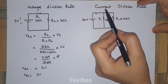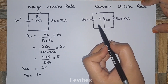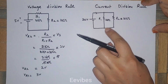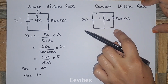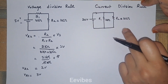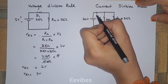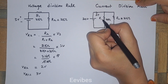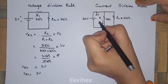Now let's look at how we apply the current division rule. We will consider the case where resistors are connected in parallel. In a parallel circuit, the current is actually divided, while in a series circuit the current remains the same.